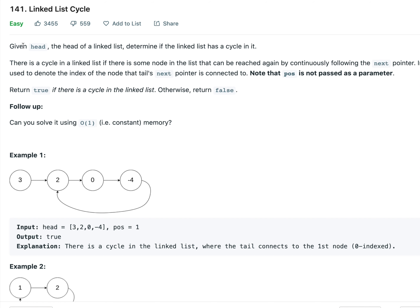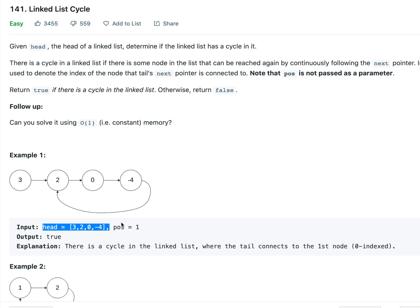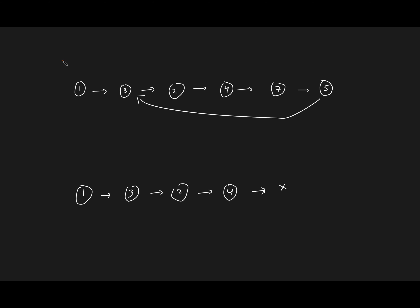The problem states that you'll be given a head of the linked list and you need to find if that linked list has a cycle in it. You can ignore the extra input because they will only be giving you the head. In the first example you can see there is a cycle — from 3, 2, 4, 7, 5 you come back to 3. In the second example there is no cycle and the linked list points to null.